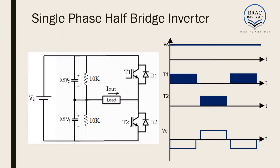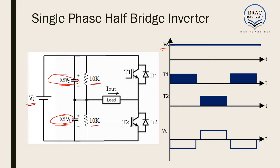The first variant of inverter that we will be learning about is a single-phase half-bridge inverter. This is the circuit of the half-bridge inverter. The VS is the DC voltage source that we are using. There are two capacitors and two resistors involved. They divide VS into two parts — this part is 0.5 VS and this part is 0.5 VS.